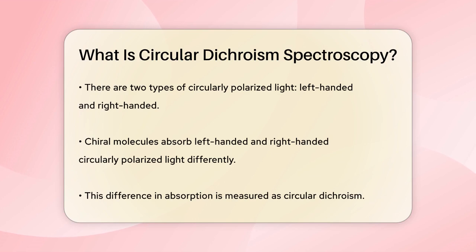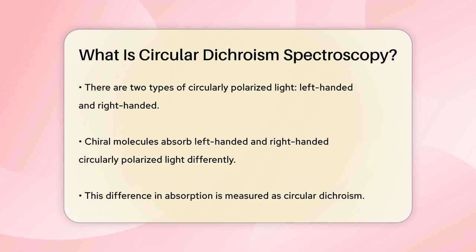Here's how it works. CD spectroscopy involves shining circularly polarized light through a sample. Circularly polarized light is special because its electric field vector rotates in a circular manner as it travels. There are two types: left-handed and right-handed. When this light passes through a chiral molecule, something interesting happens — the molecule absorbs left-handed and right-handed circularly polarized light differently due to its structural asymmetry.